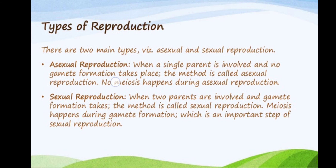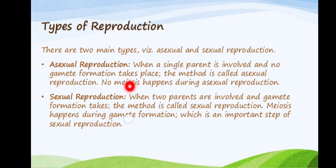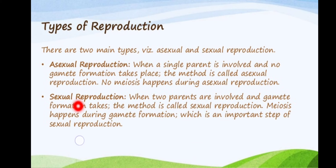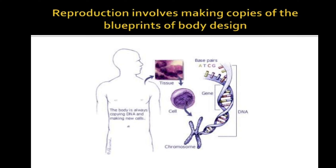There are two modes of reproduction: sexual and asexual. Asexual reproduction requires a single parent — only a single parent is involved, and no gamete formation or meiosis is required. Meiosis is the method of cell division which takes place in gametes, which you have studied in 9th class. Since gamete cells are not involved in asexual reproduction, meiosis is also not involved. Sexual reproduction requires two parents — one male and another female. जिस reproduction में दो parents involved हों, वो sexual reproduction है, और जिसमें एक single parent involved हो, वो asexual reproduction है। In sexual reproduction, gamete cells are involved; in asexual reproduction, they are not.